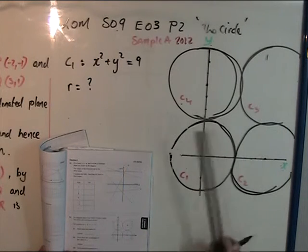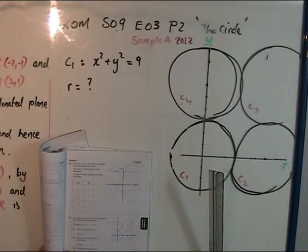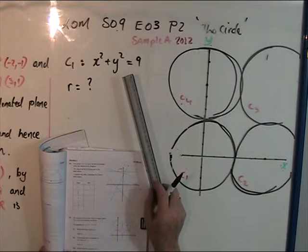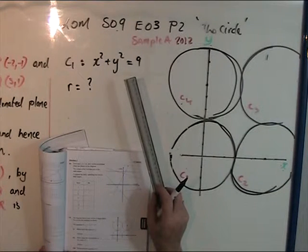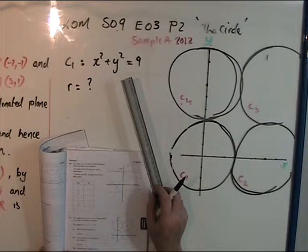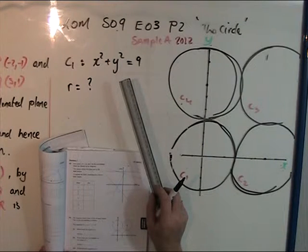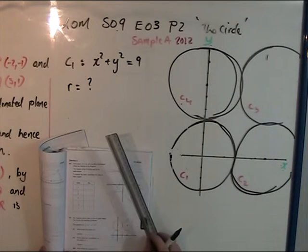Looking at sample A 2012 part B, the diagram shows four circles of equal radius. The circles are touching as shown. First, we need to write down the radius of C1.